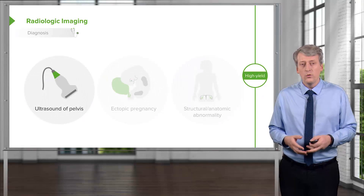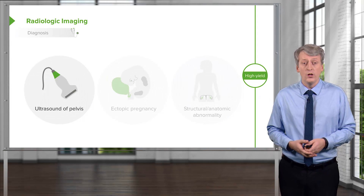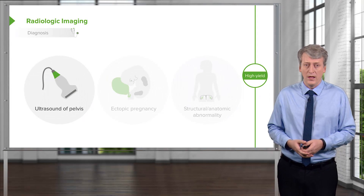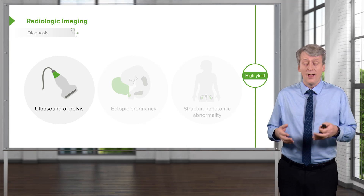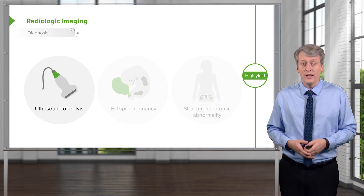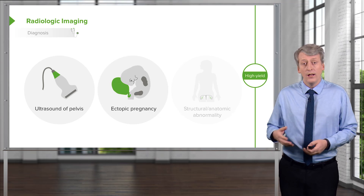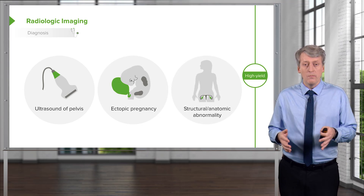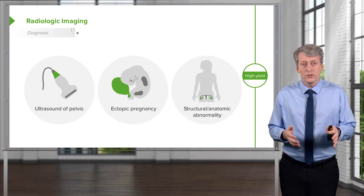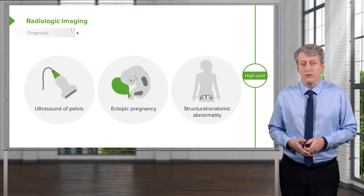We may also undergo some radiologic imaging, and in particular we may do a pelvic ultrasound. This is certainly warranted if we suspect a patient has a high HCG level and we need to rule out an ectopic pregnancy. Likewise, if a patient has a structural abnormality of the uterus or the GU tract, an ultrasound is helpful in making that diagnosis and figuring out next steps.